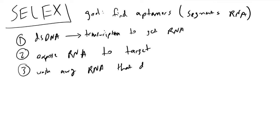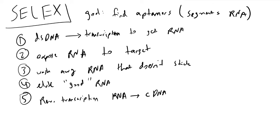We elute the good RNA, then perform reverse transcription via reverse transcriptase to convert the RNA back into cDNA, complementary DNA.